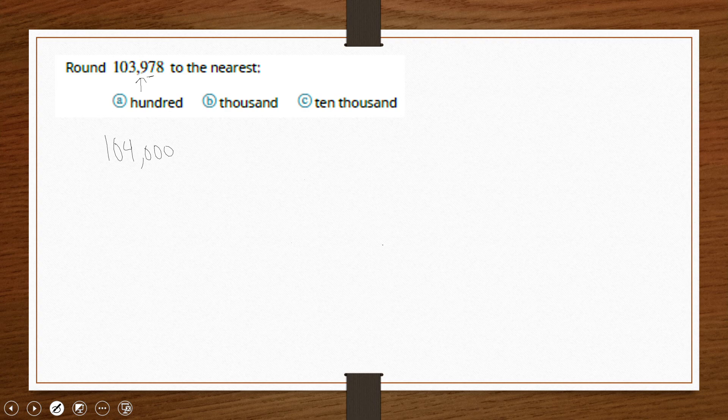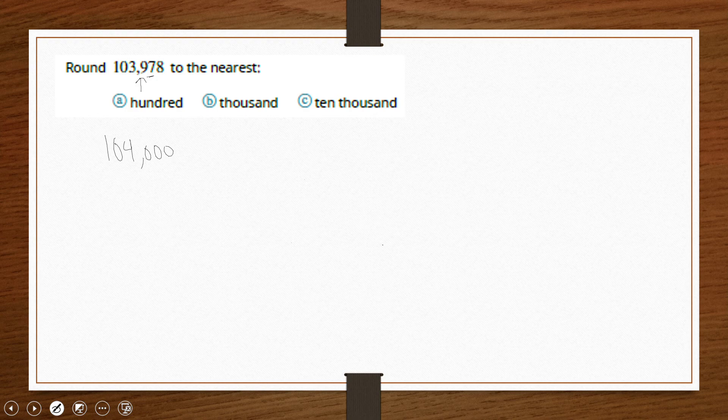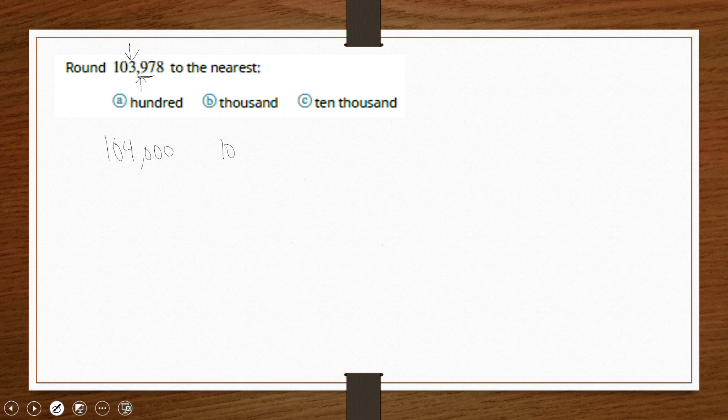So looking at the next example, the thousands place, we can actually say the same thing. The thousands digit is here, but the digit to the right is the nine, which means we round up. So this is still going to be 104,000.